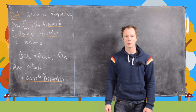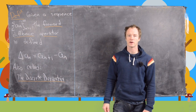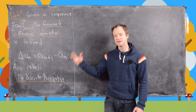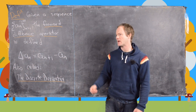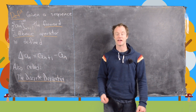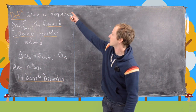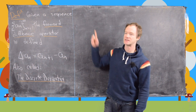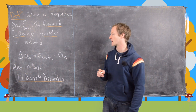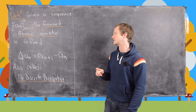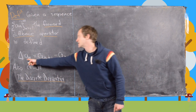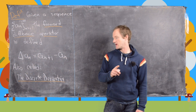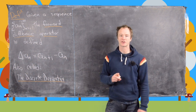In this video we're going to look at the notion of the forward difference operator and the discrete fundamental theorem of calculus. This is a really cool way to make taking a sum look like taking an integral. If we have a sequence a_n, the forward difference operator is defined as: delta a_n equals a_{n+1} minus a_n, and this is also called the discrete derivative.